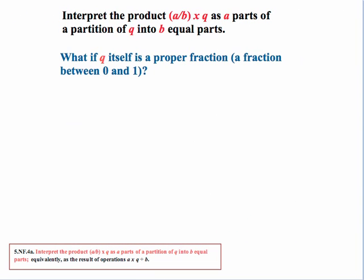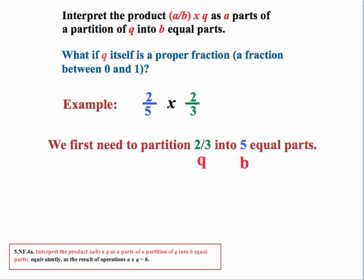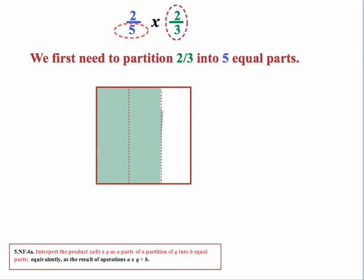Now let's try a different scenario. What if Q itself is a proper fraction—a fraction between 0 and 1? Let's take this example: we want 2 fifths times 2 thirds, or in plain English, 2 fifths of 2 thirds. So we first need to partition the 2 thirds into 5 equal parts. The 2 thirds is the Q and 5 is the B. Let's look at this visually. We're starting off with 2 thirds, and we need to split that up into 5 equal parts.